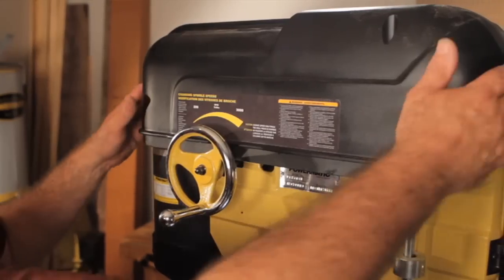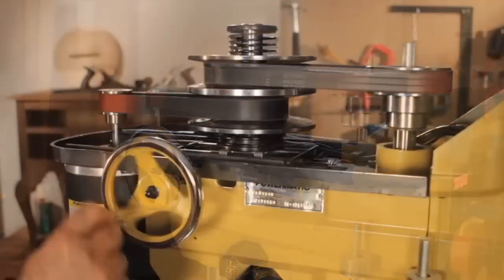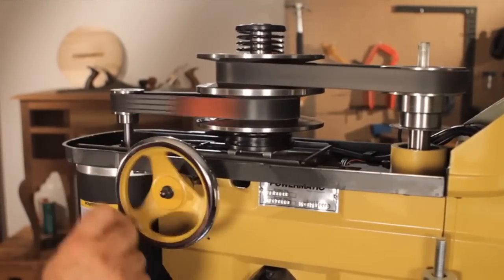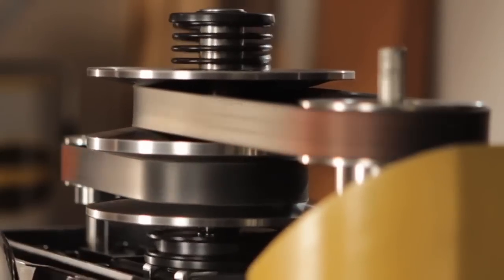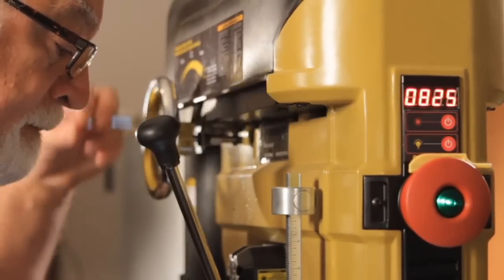The mechanical variable speed on the PM2800B is a great feature. In the middle of a project, I can't afford to take the time to adjust and change belts every time I need to change the drilling speed. And with the mechanical variable speed on this machine, I don't have to. No belt changes means a lot less headaches and a lot more enjoyment during the project.